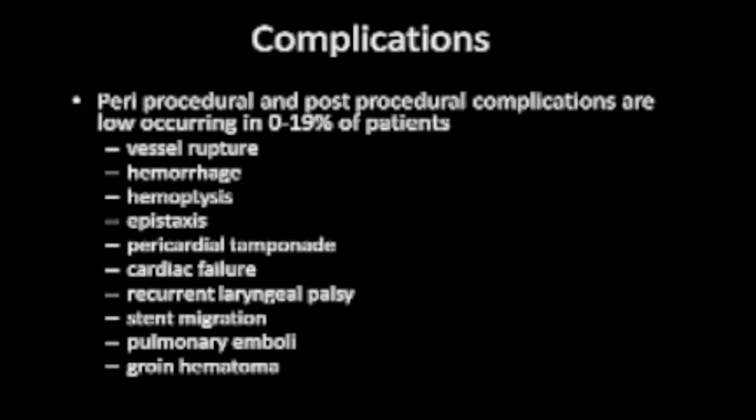What are the complications of stenting? We can get vessel rupture if we over-dilate a vessel, hemorrhage, hemoptysis, epistaxis, pericardial tamponade, cardiac failure, recurrent laryngeal palsy, stent migration, pulmonary embolism, and groin hematoma. These are very uncommon and most are listed for areas other than the internal jugular — they are more common with subclavian steal syndrome or carotid stenting.